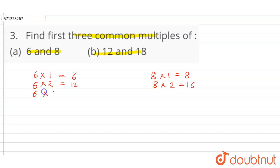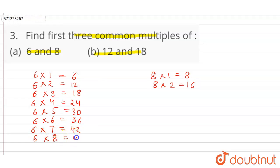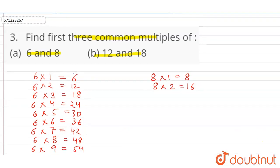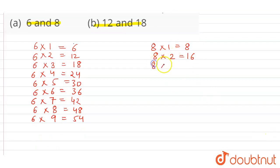We'll write 10 multiples and then find the common ones. So: 6 × 3 = 18, 6 × 4 = 24, 6 × 5 = 30, 6 × 6 = 36, 6 × 7 = 42, 6 × 8 = 48, 6 × 9 = 54, and 6 × 10 = 60.